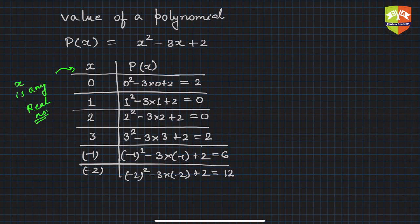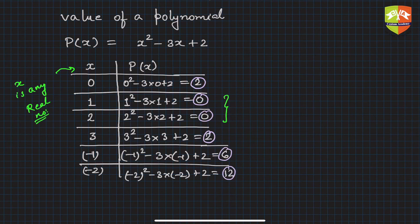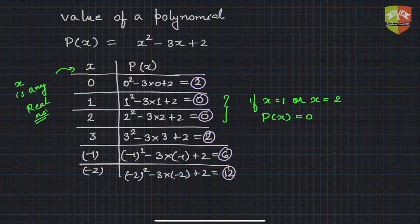So for different values of x, p(x) gives us 2, 0, 0, 2, 6, and 12. Out of these, two are of special importance to me — when x equals 1 or x equals 2, p(x) is equal to zero. That's something interesting! There are some values of x where the value of the polynomial reduces to zero.